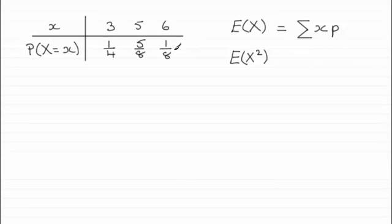So when it comes to working out E of X, remember what we did was the observed value 3 in this case times its associated probability a quarter, and then we would add to that 5 times five-eighths plus 6 times one-eighth.